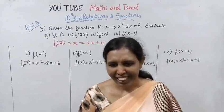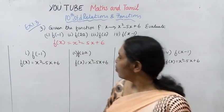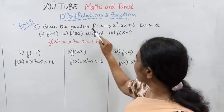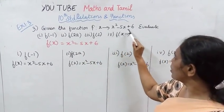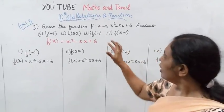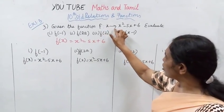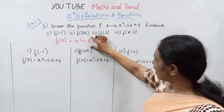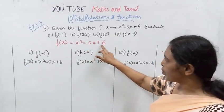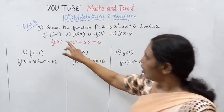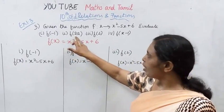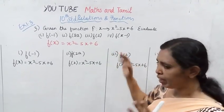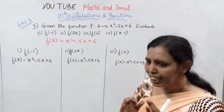Hello students, welcome to Max and Tablet channel. I am going to do exercise 1.3, third sum. Given the function f of x equals x square minus 5x plus 6, evaluate. This is what I am going to do.